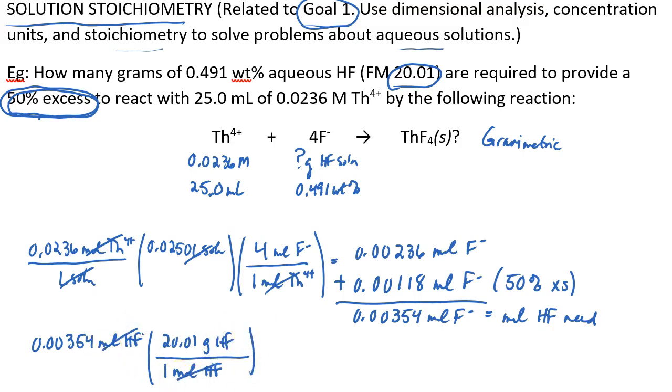And I think that was helpful, because now we can use this definition of weight percent. For every 0.491 grams of HF, there are 100 grams of HF solution. And I think that does it. Let's see if we can finish the problem.